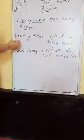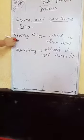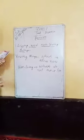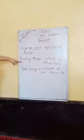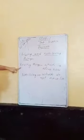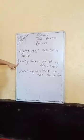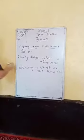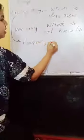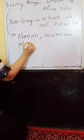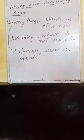Living things need air, but non-living things don't need air. Living things can feel, but non-living things cannot feel. Living things can grow, but non-living things cannot grow. Examples of living things are humans, animals, and plants.